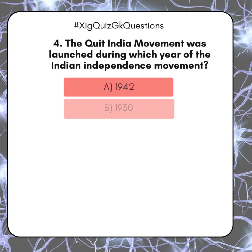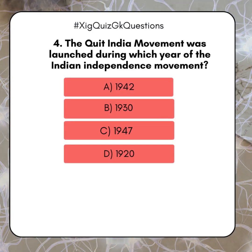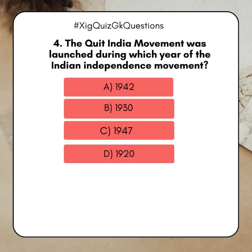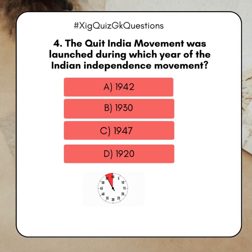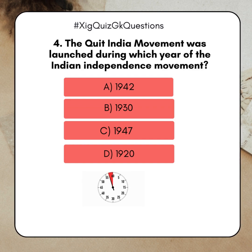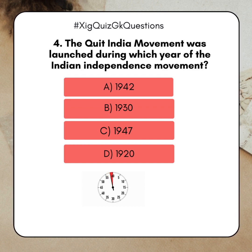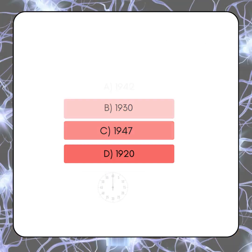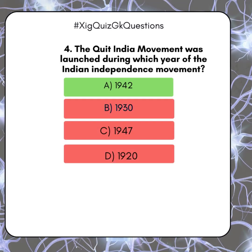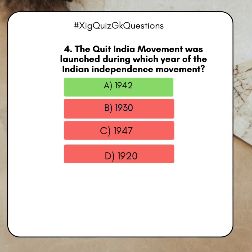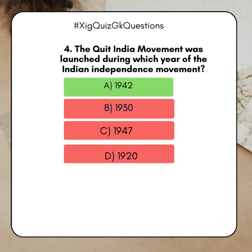The Quit India Movement was launched during which year of the Indian Independence Movement? A. 1942. B. 1930. C. 1947. D. 1920. Answer: A. 1942.